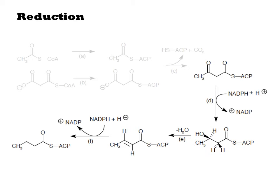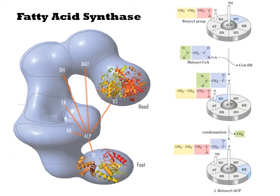The fatty acid synthase now reduces this intermediate to the alcohol, eliminates water to make the alkene, and then reduces again to make the fully saturated alkyl chain. Each one of these condensation, reduction, elimination, and alkene reduction steps occurs within a different domain of the megasynthase.